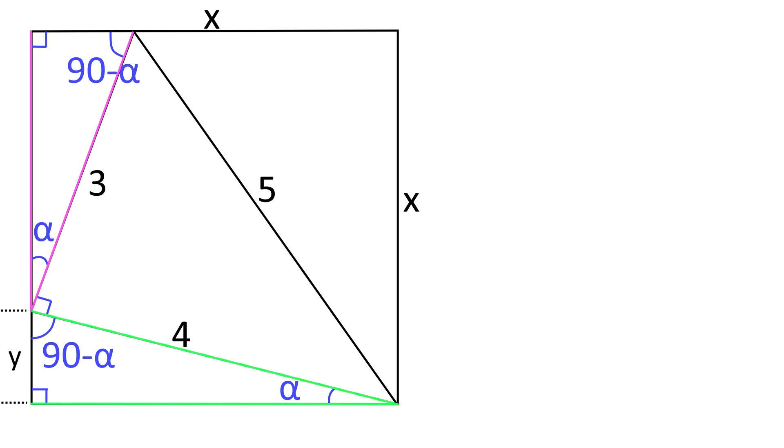This means the ratio of the two pink sides is equal to the ratio of the two green sides. If we let the short side of the green triangle as y, we have this equation.